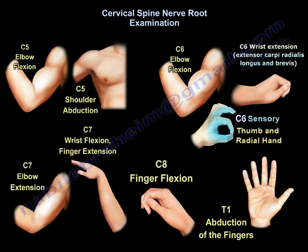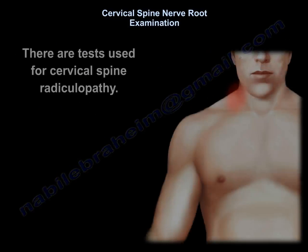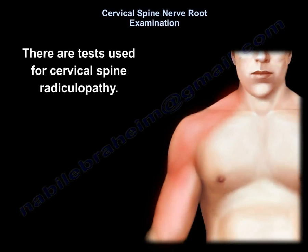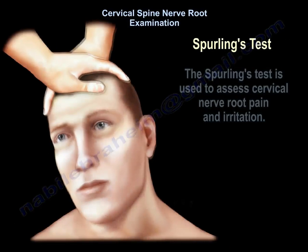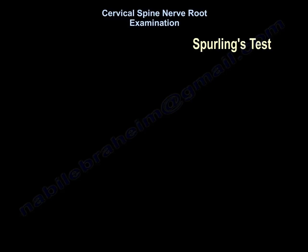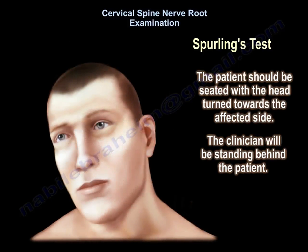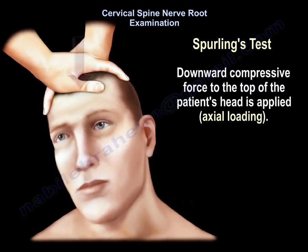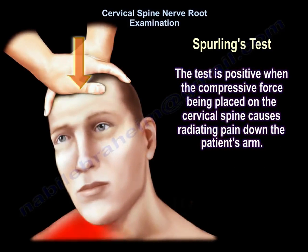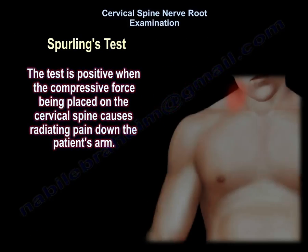This chart summarizes the nerve roots and the important nerve functions for each level. There are also clinical tests for cervical radiculopathy. The Spurling's test is used to assess nerve root pain and irritation. The patient is seated with the head turned toward the affected side, and the clinician applies a downward compressive force to the top of the patient's head. The test is positive when that compressive force causes radiating pain down the patient's arm.